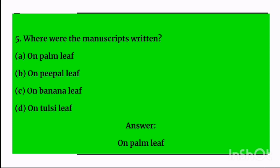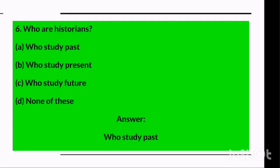Question five: Where were the manuscripts written? Options are on palm leaf, on peepal leaf, on banana leaf, or on tulsi leaf. The answer is on palm leaf — manuscripts were written on palm leaf only.